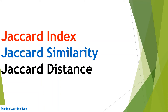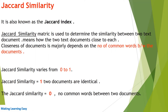Welcome to the session. In this session we are going to discuss Jaccard index, Jaccard similarity, and Jaccard distance. Jaccard similarity, also known as Jaccard index, is a metric used to determine the similarity between two text documents — how close two text documents are to each other. Closeness of documents majorly depends on the number of common words between the documents.